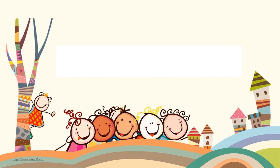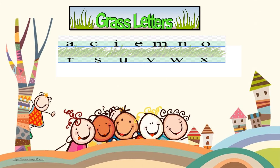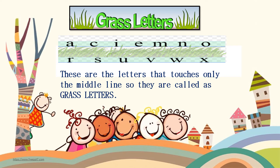The next is grass letters. The grass letters are A, C, I, E, M, N, O, R, S, U, V, W, X. These are the letters that touch only the middle line, so they are called grass letters.